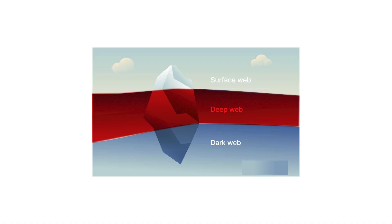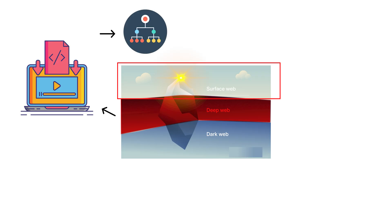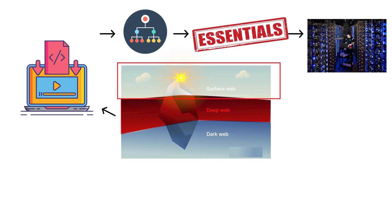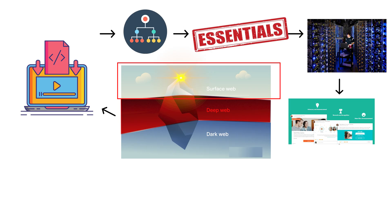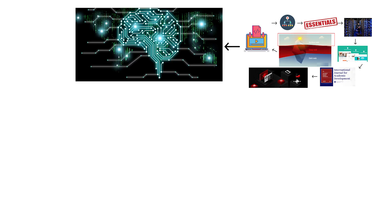Think of the internet as an iceberg. The surface web is the tip glimmering in daylight. The deep web is everything below — vast, structured, and essential. It contains government databases, corporate intranets, academic journals, and billions of private conversations that form the nervous system of our digital society.